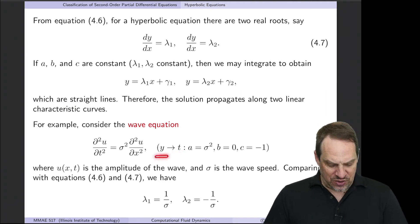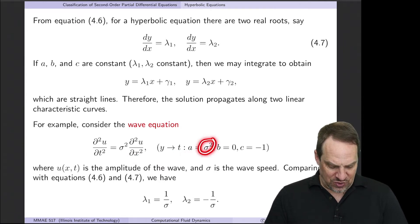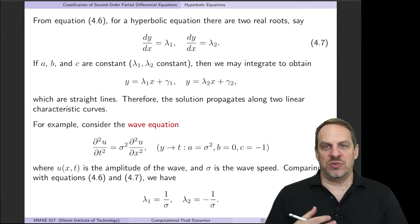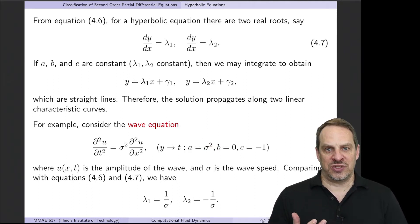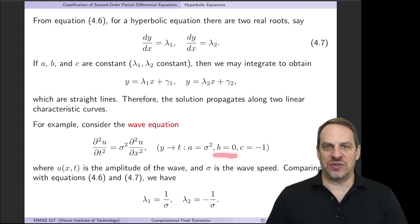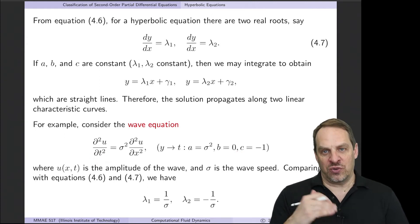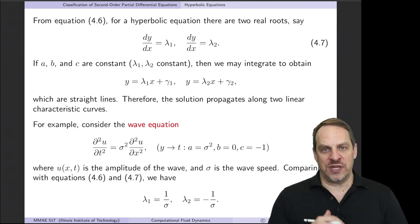So y is now t. The coefficient a is the coefficient of the u_xx term, which is σ². There is no mixed derivative term—a term ∂²u/∂x∂t—so b is equal to zero. And c is the coefficient of the u_tt term, which is −1 if we bring that term to the right-hand side.